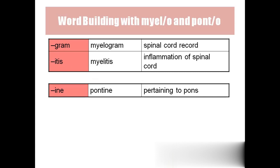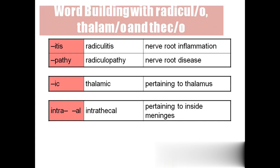'Pontine' means pertaining to the pons. 'Radiculitis' means nerve root inflammation — 'radicul-' means nerve root. 'Radiculopathy' means nerve root disease. 'Thalamic' means pertaining to the thalamus. 'Intrathecal' means pertaining to inside the meninges — 'theca' means sheets, referring to the meninges that cover the brain and spinal cord, and 'intra-' means inside.